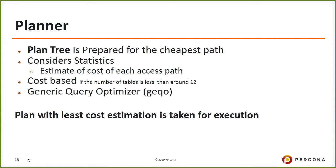The planner considers statistics in the table to estimate the cost of each access path. Postgres has a cost-based optimizer and also a genetic query optimizer. The selection is: if there are fewer than 12 tables (configurable), it goes for the cost-based optimizer. Otherwise it uses the genetic query optimizer, because when many tables are involved there could be multiple paths and analyzing all combinations of executions would be too complex.